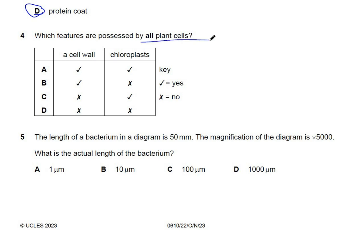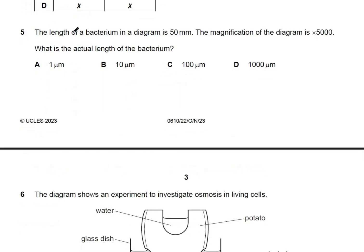Question 4: which features are possessed by all plant cells? Not all plant cells have the green pigment, so not all plant cells have chloroplasts. However, all plant cells possess a cell wall. The answer to this question is B.